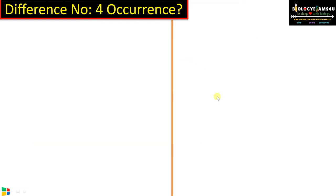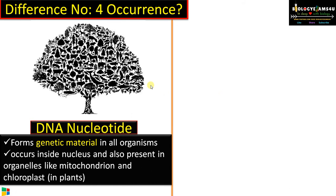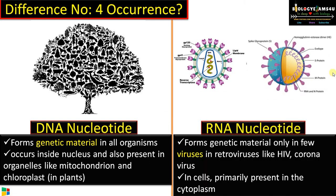Difference number four regarding occurrence: DNA nucleotide forms the genetic material DNA in all organisms. It is primarily seen inside the nucleus, and is also present in semi-autonomous organelles like mitochondria and chloroplasts in plants. Whereas RNA nucleotide forms the genetic material only in a few viruses like HIV, coronavirus, etc. In cells, it is primarily present in the cytoplasm.